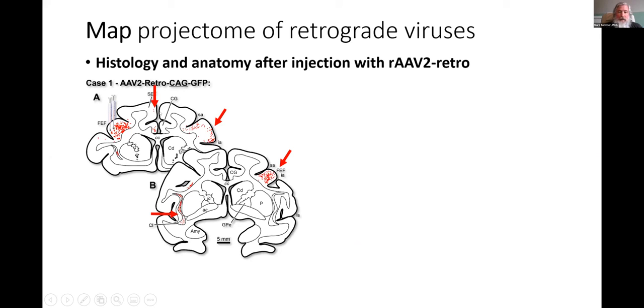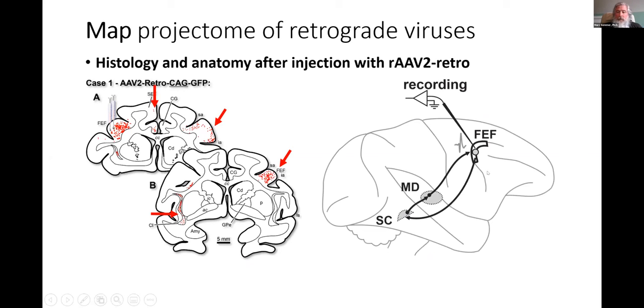Kind of disappointingly though, for what I really want to get at, which is studying the circuit, one of the main projection neurons I want to study are the ones in the thalamus that project up to frontal eye field. And using this vector, we were never able to get retrograde labeling in those neurons. So there's a lot of selectivity here in the ability to retrogradely label sites.